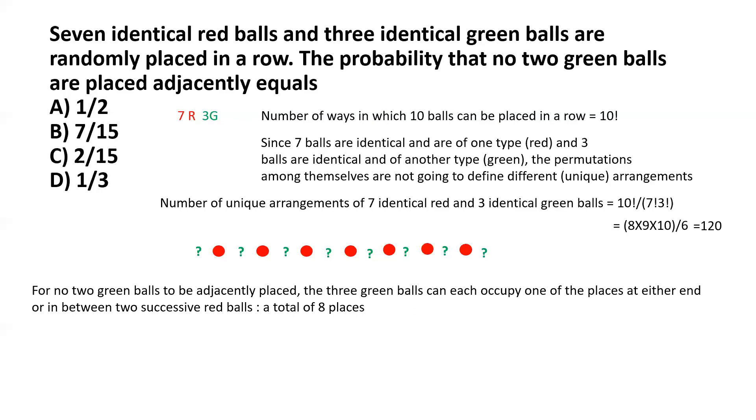This then simply comes down to choosing three places for those three identical green balls from a total number of eight potential places. That can be determined by 8C3, which is factorial 8 divided by factorial 3 multiplied by factorial 5 in the denominator, and that comes to 56.